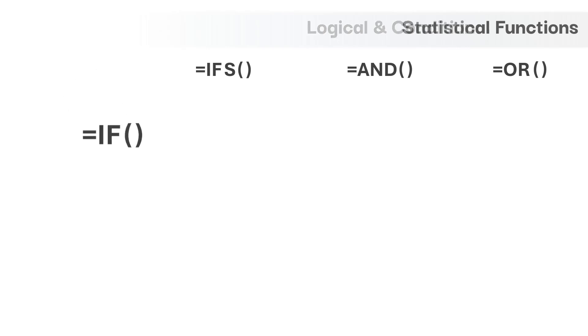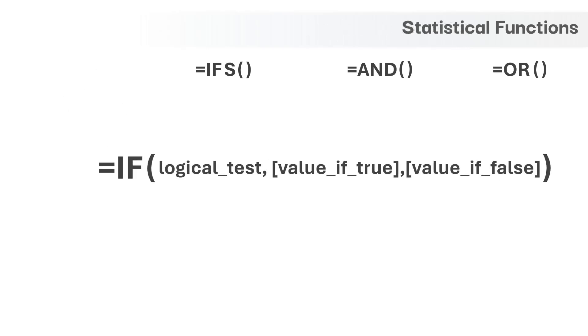First is the IF condition and it has three arguments. Let's try to break it down. The first is the function name IF and it is the way of telling Excel to check something and do something based upon this check.